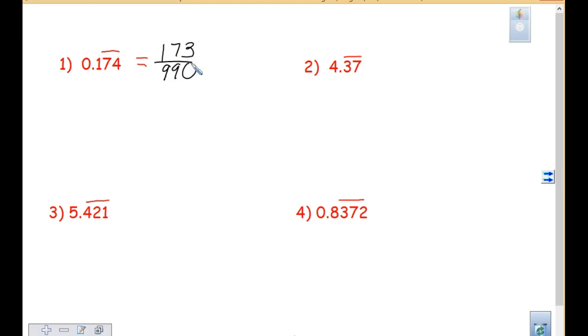Number two should have been equal to 4 and 37/99. Number three should have been equal to 5 and 421/999. And the last one, a really ugly number, you should have had 8364 over 9909.